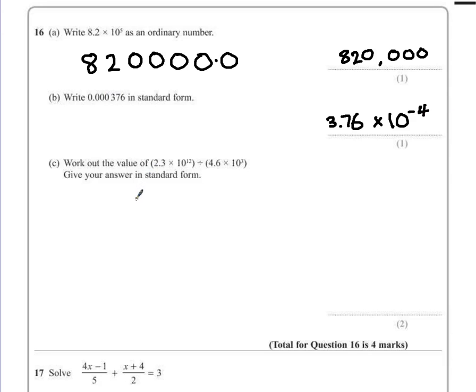Part C. Work out the value of 2.3 times 10 to the 12 divided by 4.6 times 10 to the 3. Give your answer in standard form.